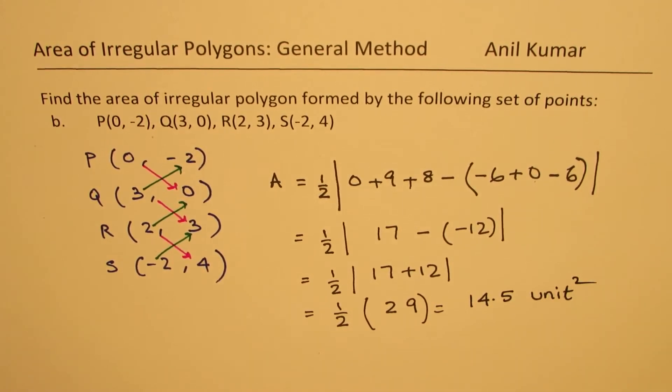Area will always be in units squared. That is how you can find area of this quadrilateral using the method, which is also known as shoestring method.